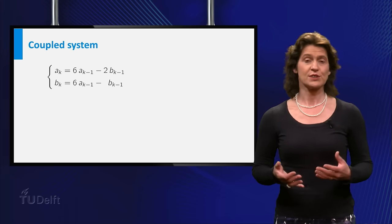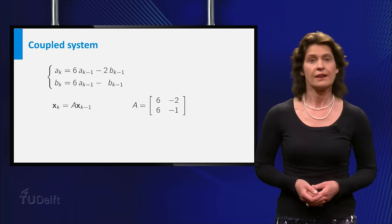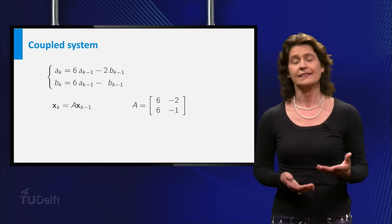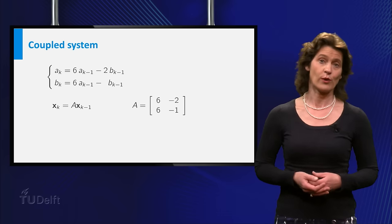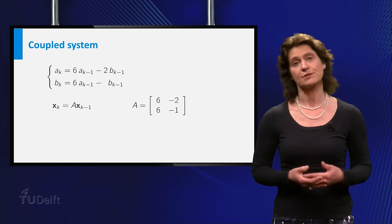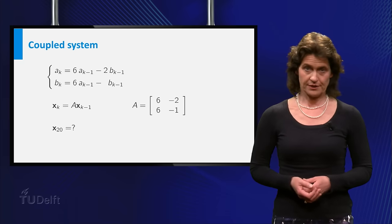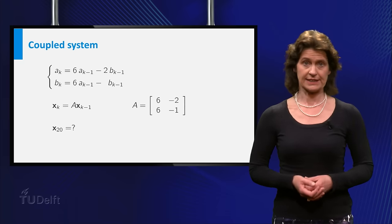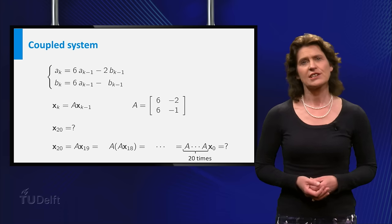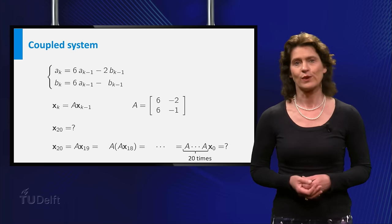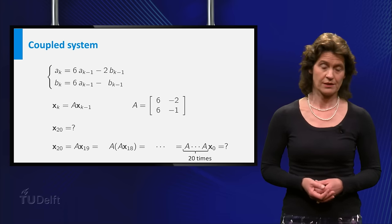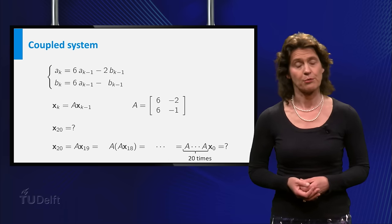Writing this in matrix form is not the problem. xk is equal to A times xk minus 1. And now A is the matrix 6 minus 2, 6 minus 1. But computing x20 is. Actually doing the matrix multiplications 20 times is hard work.